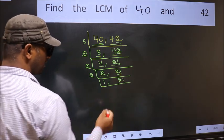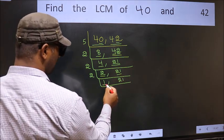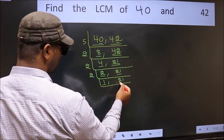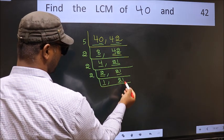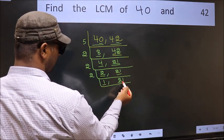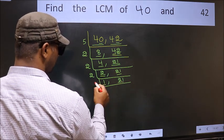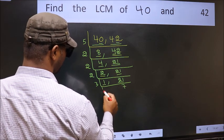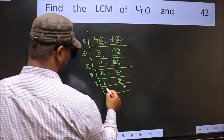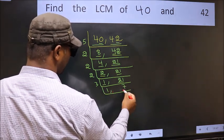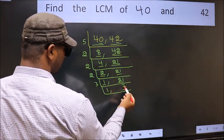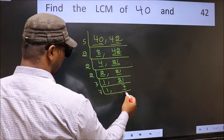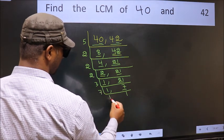Now we have 7. 7 is a prime number, so 7 times 1 is 7.